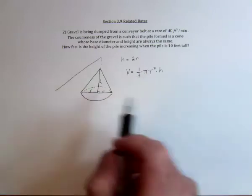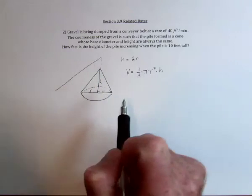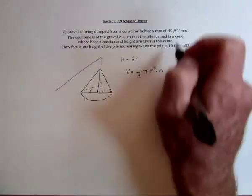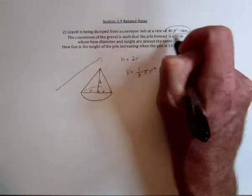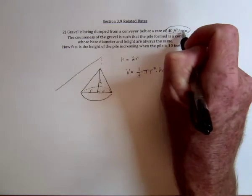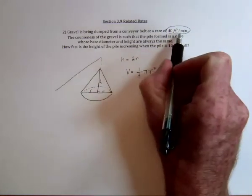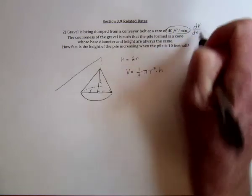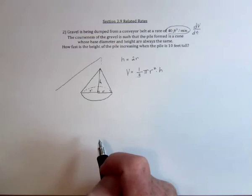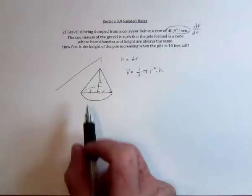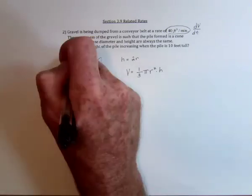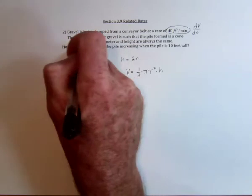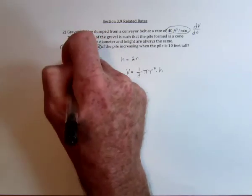This is the derivative of the volume with respect to time. So often you can use the units to help you out. This is saying the change in the volume with respect to the change in time. How fast is the height? This is saying how fast is the height changing with respect to time.